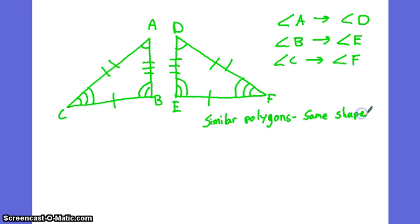That's different from congruent polygons. Congruent polygons have the same shape and are the same size. So same size and shape. So keep those things in mind as we continue through today's lesson.